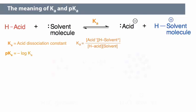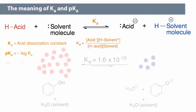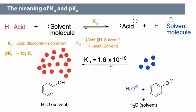When the acid is stronger, the equilibrium lies more to the right, meaning the Ka is larger and the pKa value is smaller. When the acid is weaker, the equilibrium lies more to the left, the Ka is smaller and the pKa value is larger.